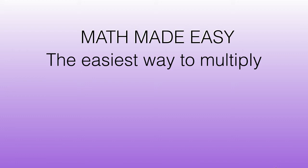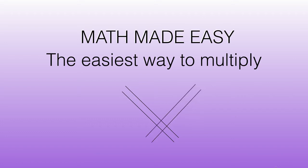So for example, if we were trying to calculate 2 times 3, we'd have 2 diagonal lines from the top left to bottom right and 3 diagonal lines from the top right to bottom left, and make them cross somewhere near the bottom. We then put a circle around where the lines meet. Every time the lines meet, that is a hit point.